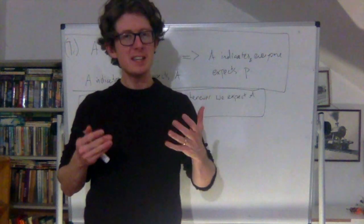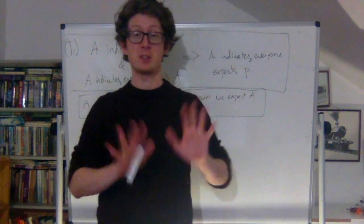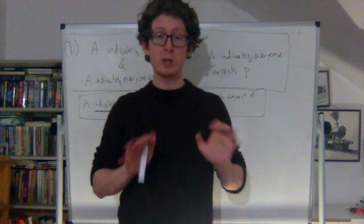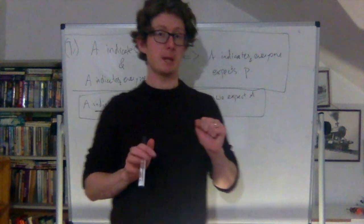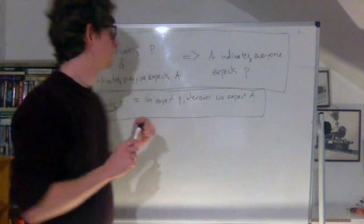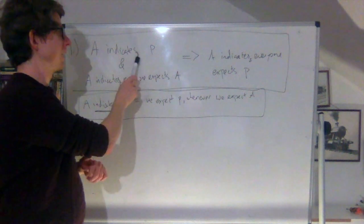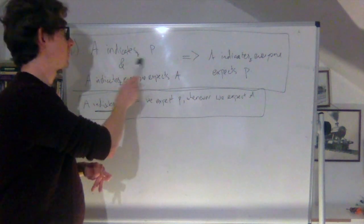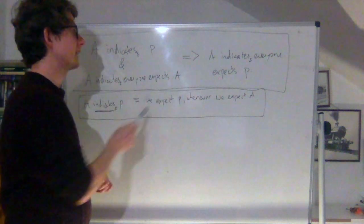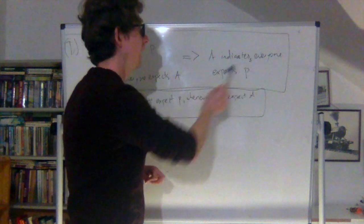The reason why I call it T is because it's sort of like a transitivity property. Principal T is a principle about indication. What it says is that if A indicates p to everyone, and it indicates to everyone that everybody expects A, then it in turn indicates that everybody expects p.